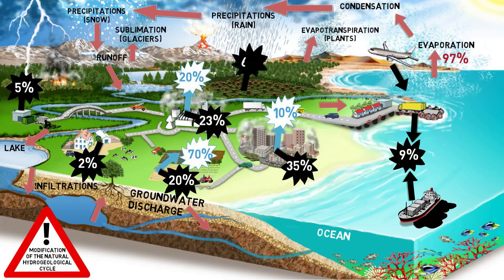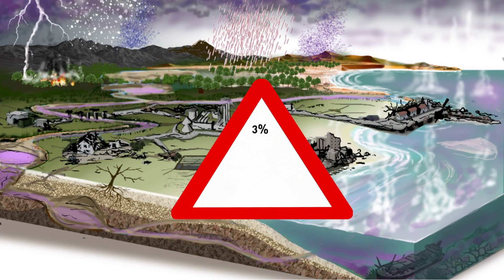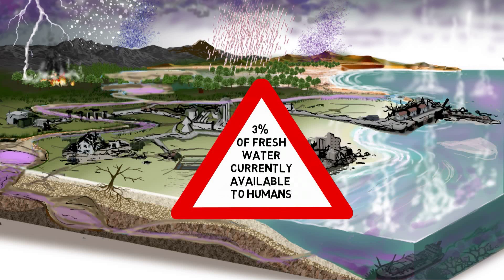Deforestation is another harmful activity, as trees help perpetuate the water cycle by returning water vapor back into the atmosphere. If drastic actions are not taken immediately, the consequences of what we are doing are going to be tremendous, with the first impact to be felt by the three percent of fresh water currently available to humans.